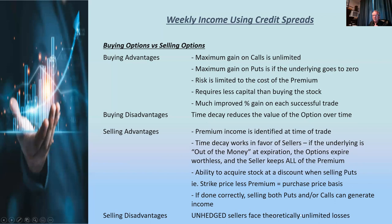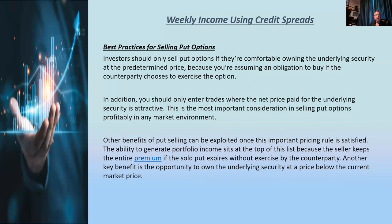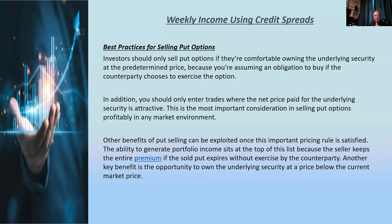If done correctly, selling both puts and calls can generate income, which I'll show in the next session. However, the disadvantage is that unhedged sellers face theoretically unlimited losses. You have to keep that in mind. I'll show you how you can hedge to prevent this — that's what credit spreads are. Best practice: only sell options when you're comfortable the stock is going up, and only enter trades where the net price paid for the underlying is attractive.